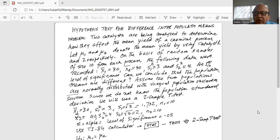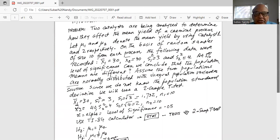X1 bar is equal to 30, S1 square is equal to 3. Therefore, S1 or the standard deviation is square root of 3 or 1.732. N1 is equal to 10. X2 bar is 40, S2 square is equal to 4. Therefore, S2 is square root of 4 which is 2 and N2 equal to 10. Alpha, the level of significance, is given as 0.05.